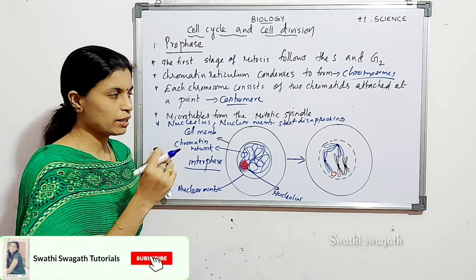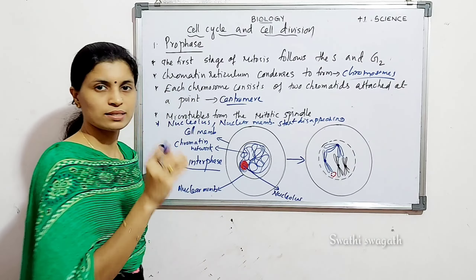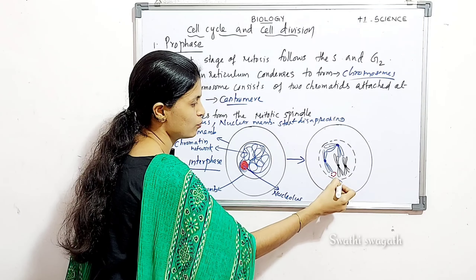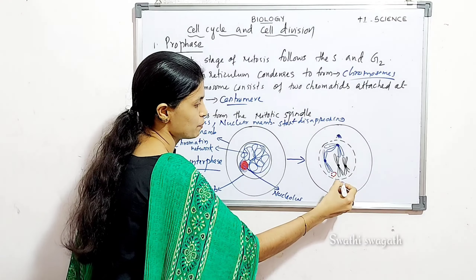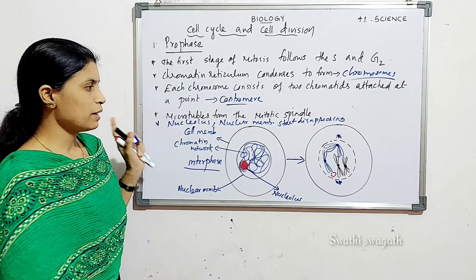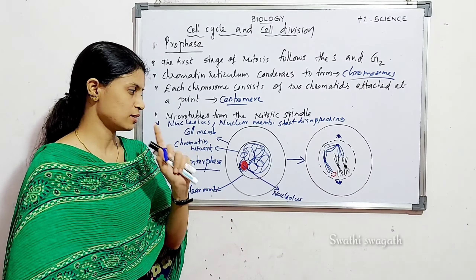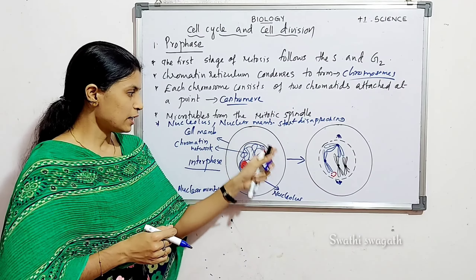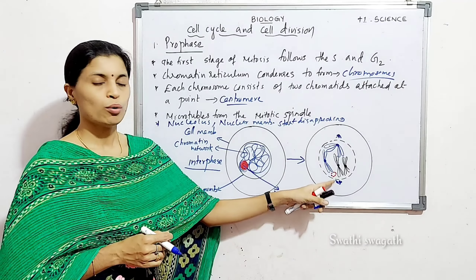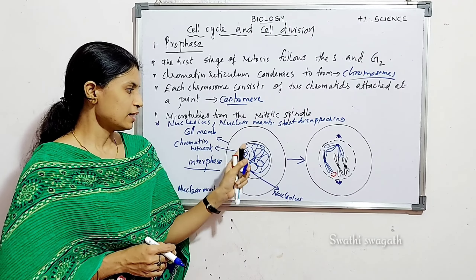All cell organelles such as Golgi complex and endoplasmic reticulum disappear when viewed under the microscope. In the case of animal cells, the two centrioles move to opposite poles and spindle fibers start forming between the two poles. So the main events in prophase are: chromatin network condenses to form chromosomes; nuclear membrane and nucleolus start disappearing; and centrioles move to poles and start formation of the mitotic spindle fibers.